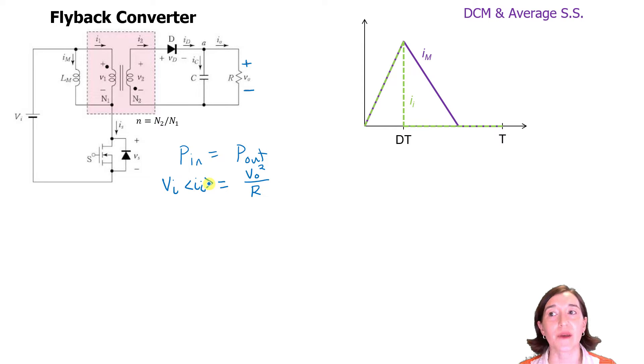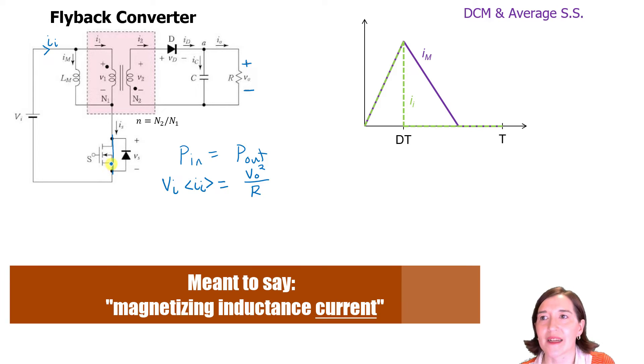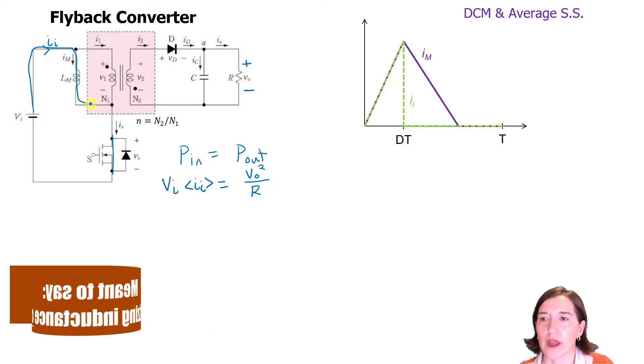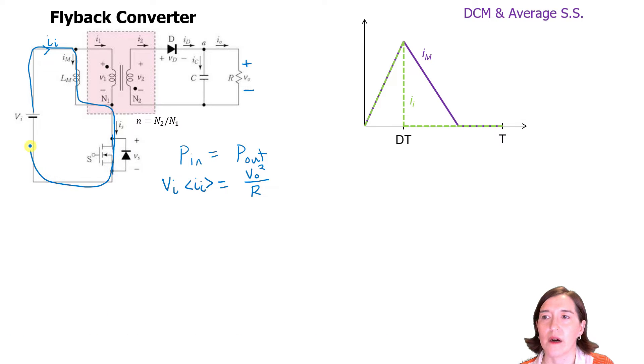So what would the input current be? The input current is this current coming in here. Notice it's actually going to be the same as IS, the current through the switch. And in some parts, when the switch is on in phase one, the input current will be exactly the same as the magnetizing inductance, because we are going through this way on the input.